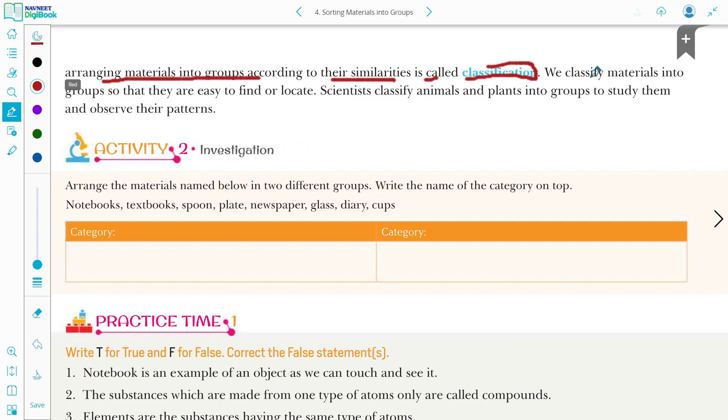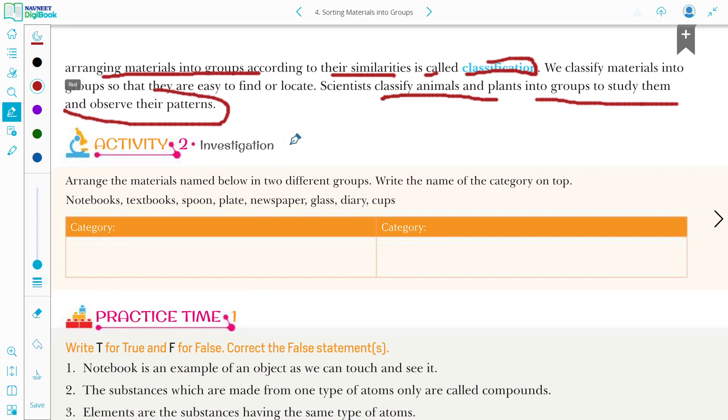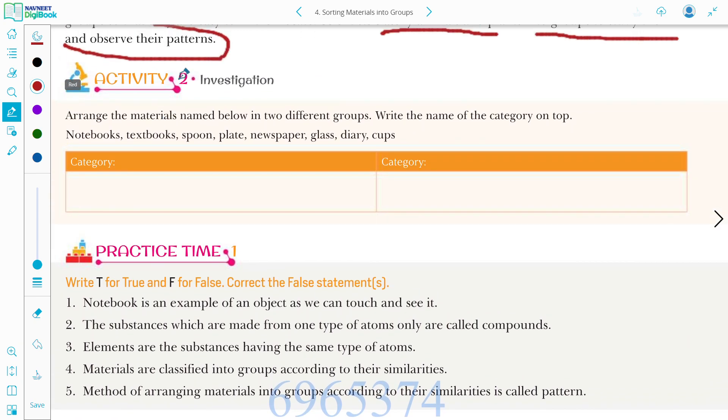The method of arranging materials into groups according to their similarities is called classification. We classify materials into groups so that they are easy to find or locate. Same as the scientists classify animals and plants into groups to study them and observe their patterns. This is also an answer to your question. Why do scientists classify animals and plants? Scientists classify animals and plants into groups to study them and observe their patterns.